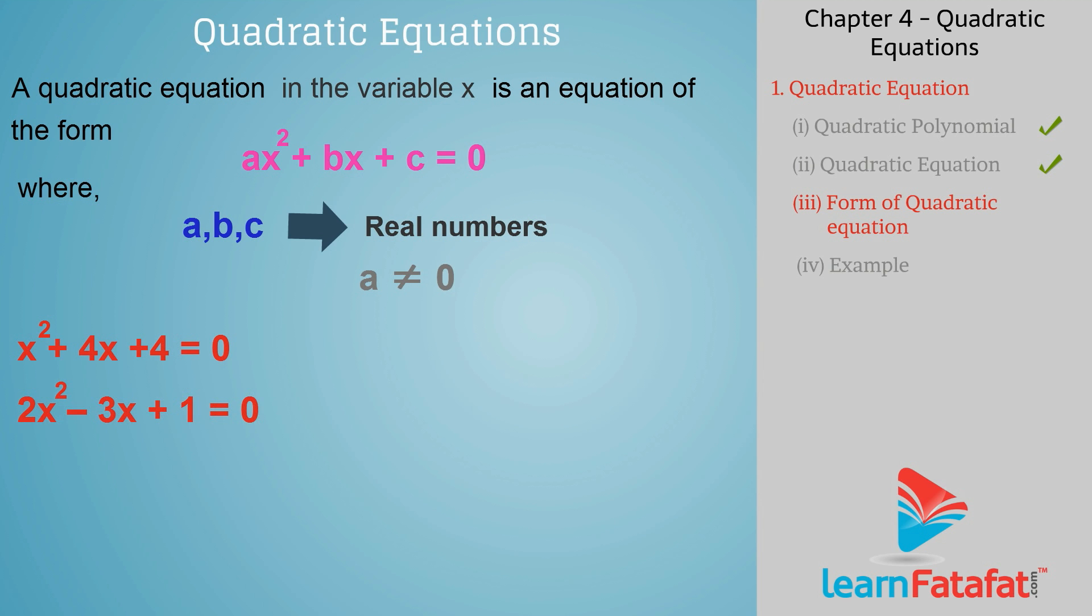Examples: x² + 4x + 4 = 0 and 2x² - 3x + 1 = 0 are quadratic equations. 2x + 3 = 0 and 2x³ - 3x + 1 = 0 are non-quadratic equations.